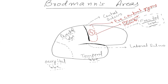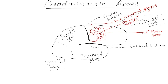Anterior to the primary motor area is area number 6, the secondary motor area. Within area number 6, there is the premotor cortex below and the supplementary motor cortex above. Both together form the secondary motor area, area number 6.